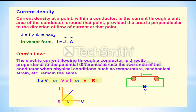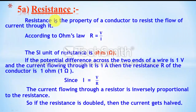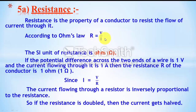With increasing potential, current increases but resistance remains constant. The slope of the graph represents the resistance. Resistance is the property of a conductor to resist the flow of current. According to Ohm's law, R equals V by I. The SI unit of resistance is Ohm. One Ohm is defined as: if the potential difference is 1 volt and current is 1 ampere, the resistance is 1 Ohm. If voltage is constant, current is inversely proportional to resistance.